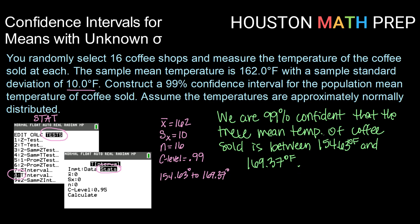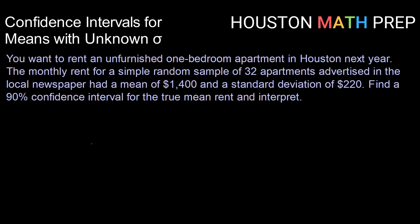We can answer these questions using the T interval underneath the stat menu. Alright, trying a similar question. You want to rent an unfurnished one-bedroom apartment in Houston next year. The monthly rent for a simple random sample of 32 apartments advertised in the local newspaper had a mean of $1,400 and a standard deviation of $220. Find a 90% confidence interval for the true mean rent and interpret.